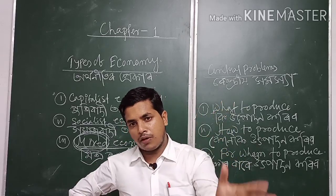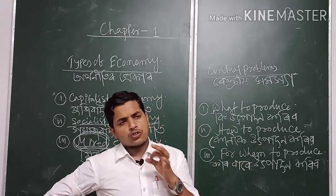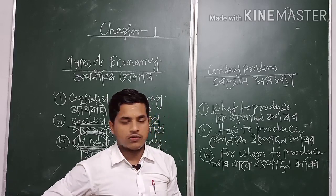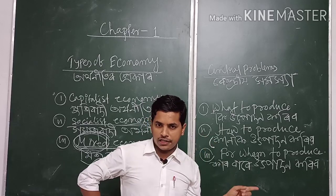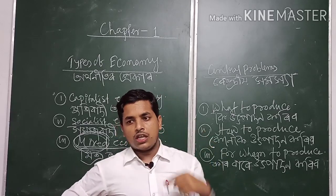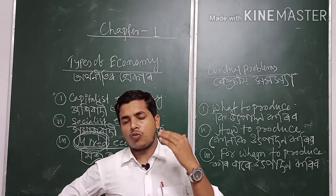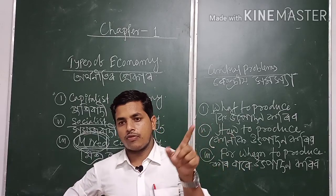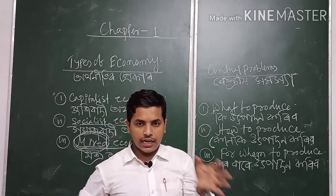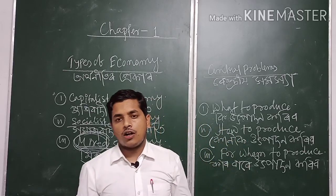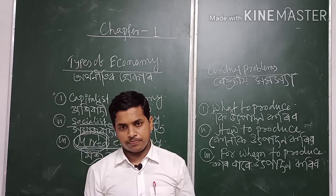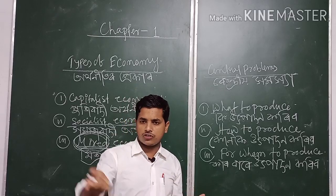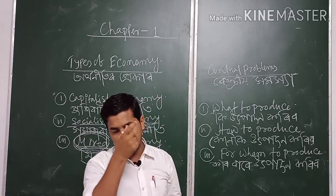We need to know why central problems arise in an economy. There are three main causes behind the emergence of central problems. First, human wants are unlimited. Second, to fulfill those unlimited wants we have limited resources. Third, every resource has alternative uses. These three factors result in the central problems of an economy.